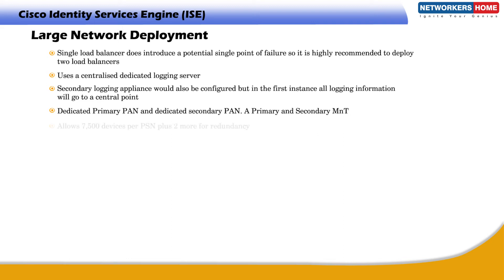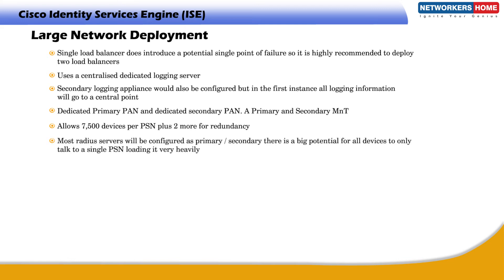Typically, allow 7500 devices per PSN, plus 2 more for redundancy. Due to the standard configuration on switches where most RADIUS servers are configured as primary or secondary, there is a big potential for all devices to only talk to a single PSN, loading it very heavily. To overcome this, it is a best practice to introduce a load balancer — ideally a redundant pair — which will provide a single virtual IP for the RADIUS server. The load balancers will then balance requests to all the PSN nodes.